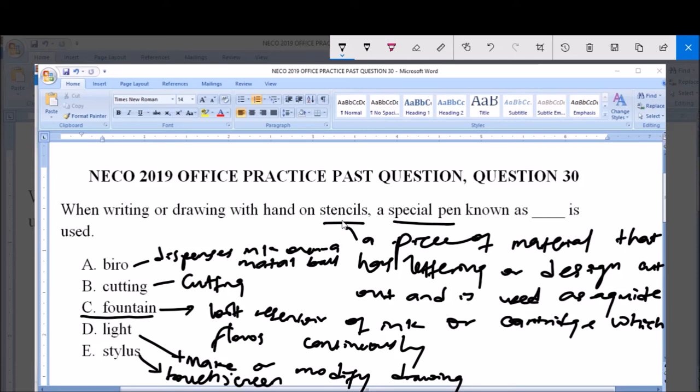But the pen used for writing on a stencil is the fountain pen because it contains a reservoir of ink or cartridge of ink by which ink flows continuously and it is used for lettering. So the answer to this question is option C, fountain pen. Thank you and God bless you, and share and subscribe to our channel for more videos.